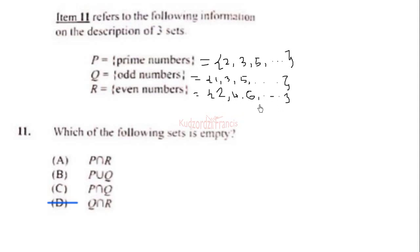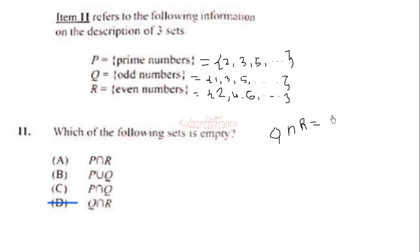We are supposed to determine which of the following sets is empty. If you look at set Q, which is the set of odd numbers, and set R, which is the set of even numbers, you don't have any intersection. So Q intersection R will be equal to a null set — we call it an empty set. The correct answer is D.